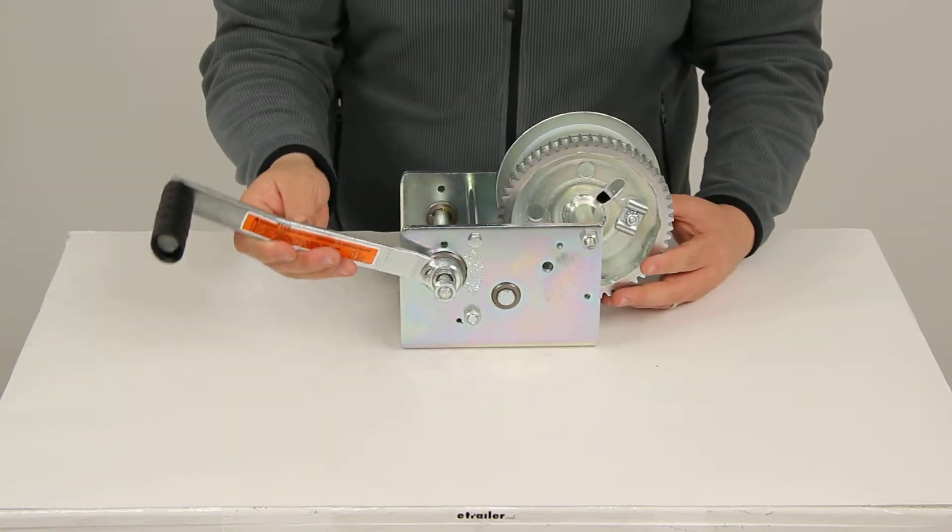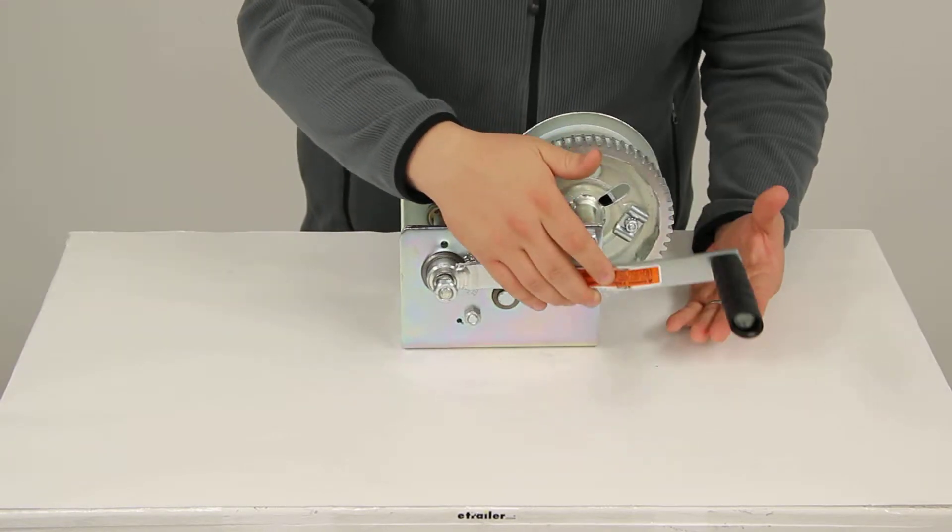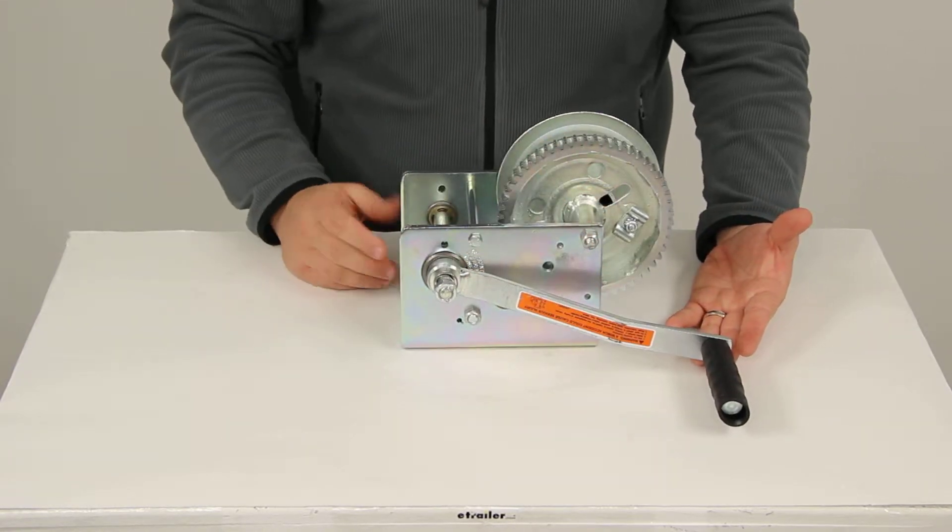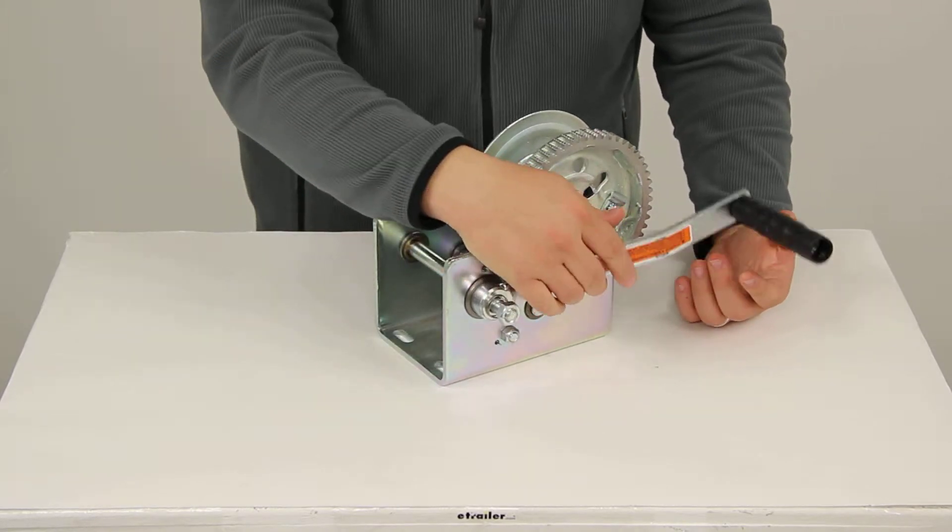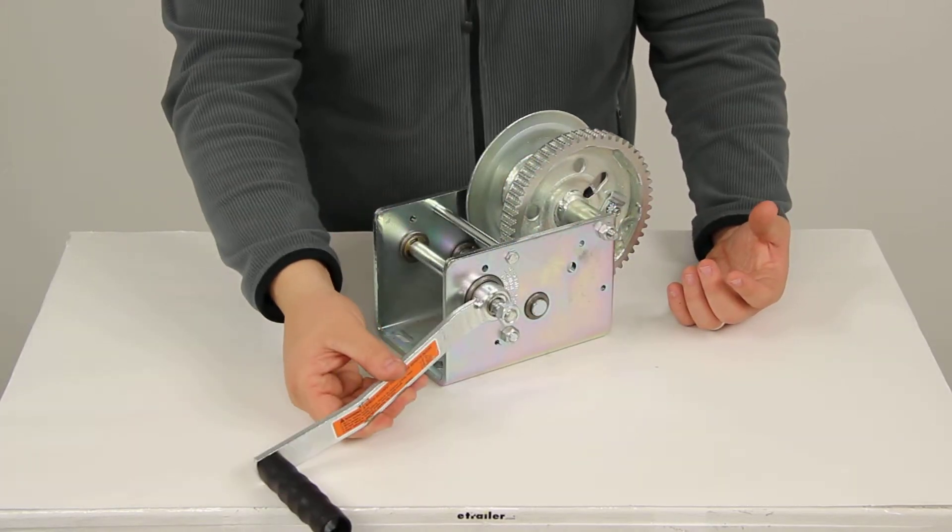To bring our line in, we simply just rotate clockwise. And this does not have a free will option, so to extend our line out, we simply just need to turn the handle counter-clockwise.